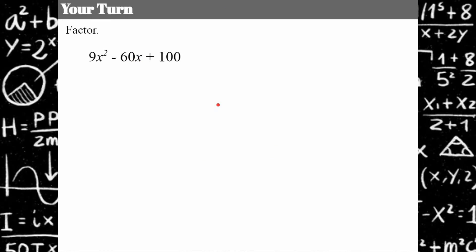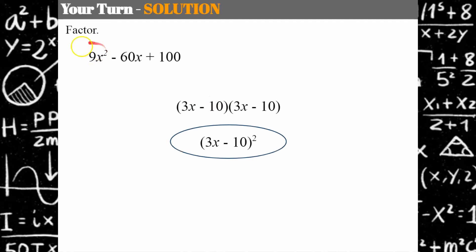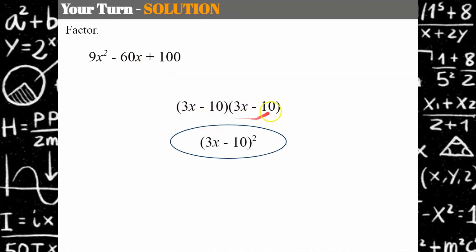One more for you — try this one, then come back when you're ready. Welcome back. The perfect square of 9x² gives a square root of 3x, and the perfect square of 100 gives a square root of 10. We know it's a difference because of the subtraction sign. The inner terms give 30x and the outer terms give −30x, which add to −60x. So the answer is (3x − 10)².